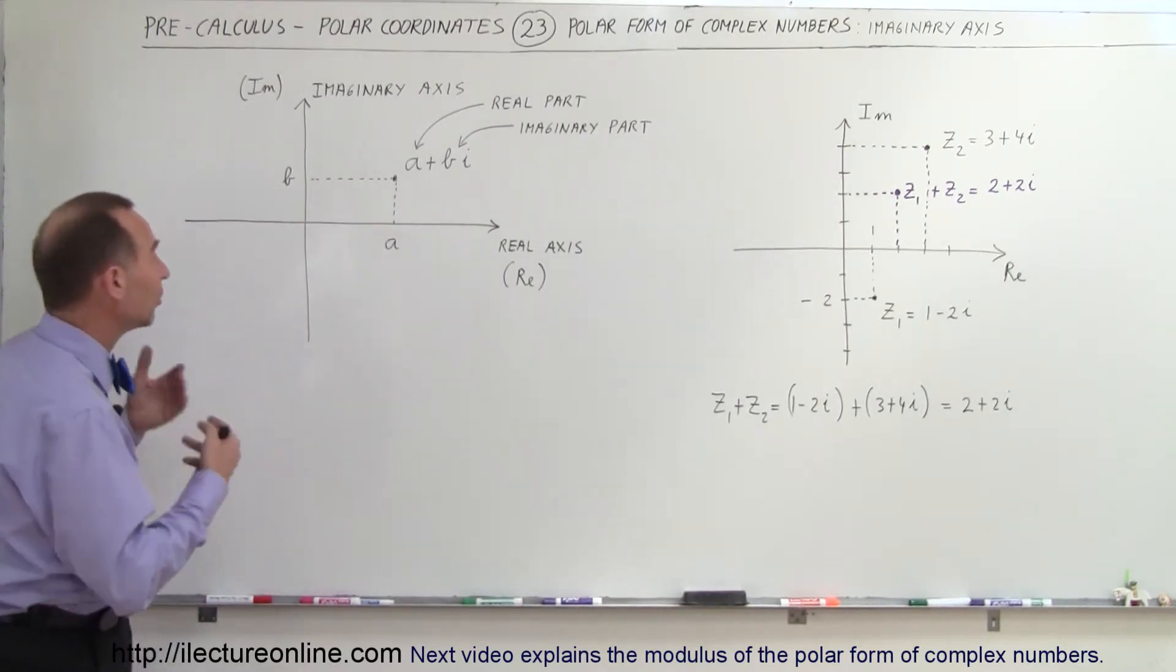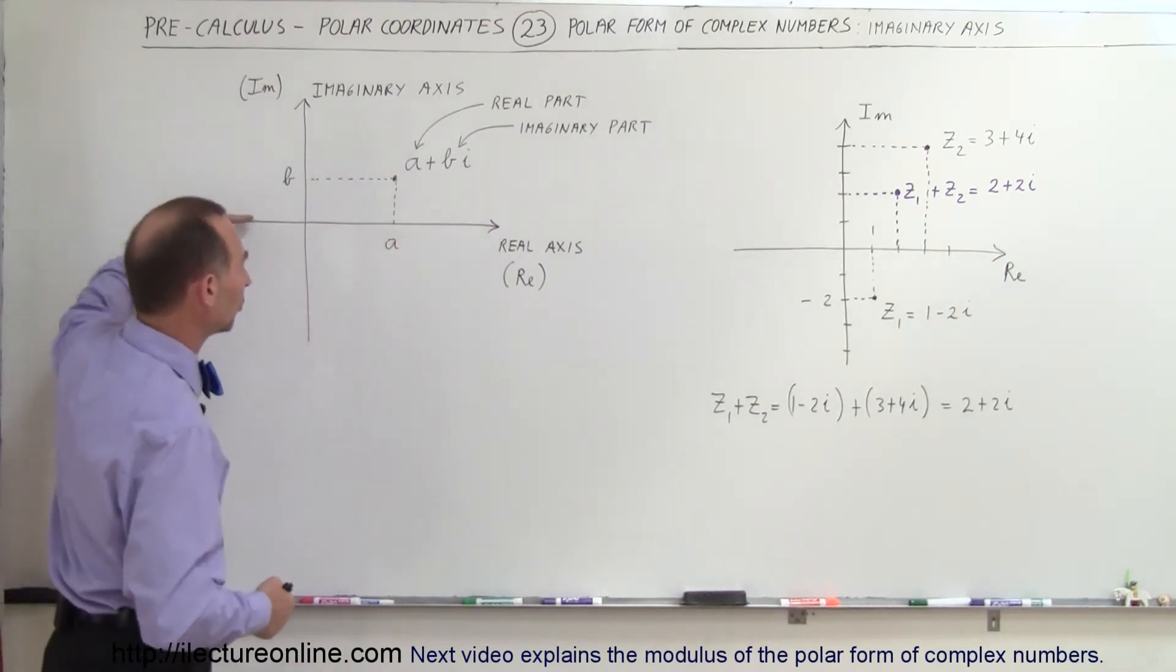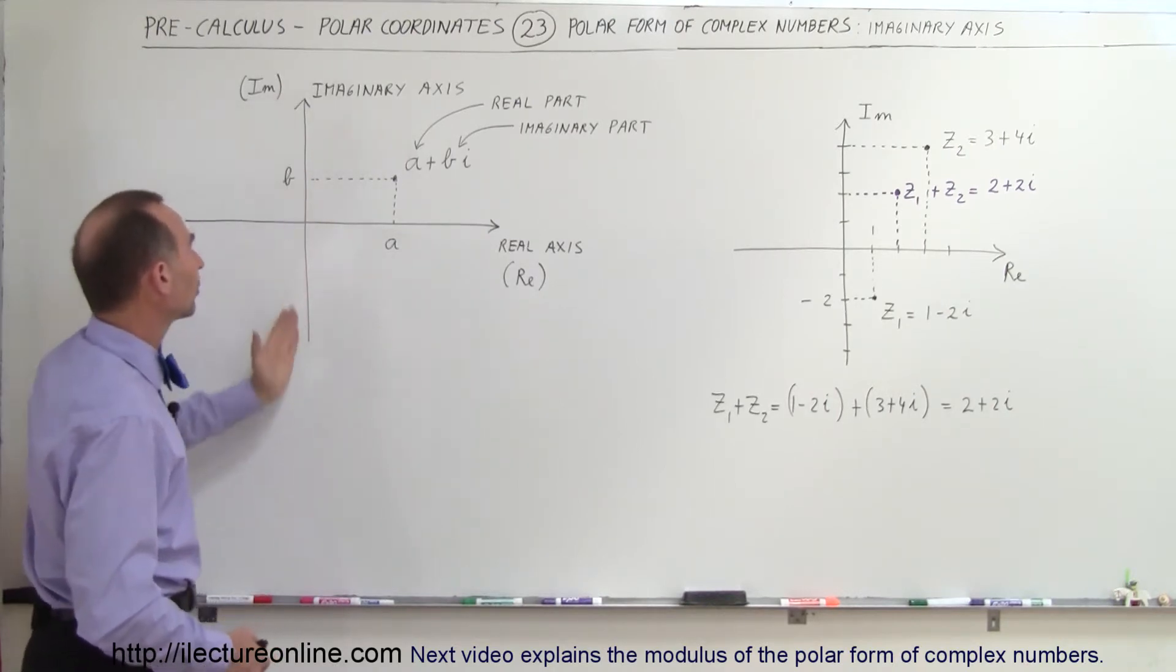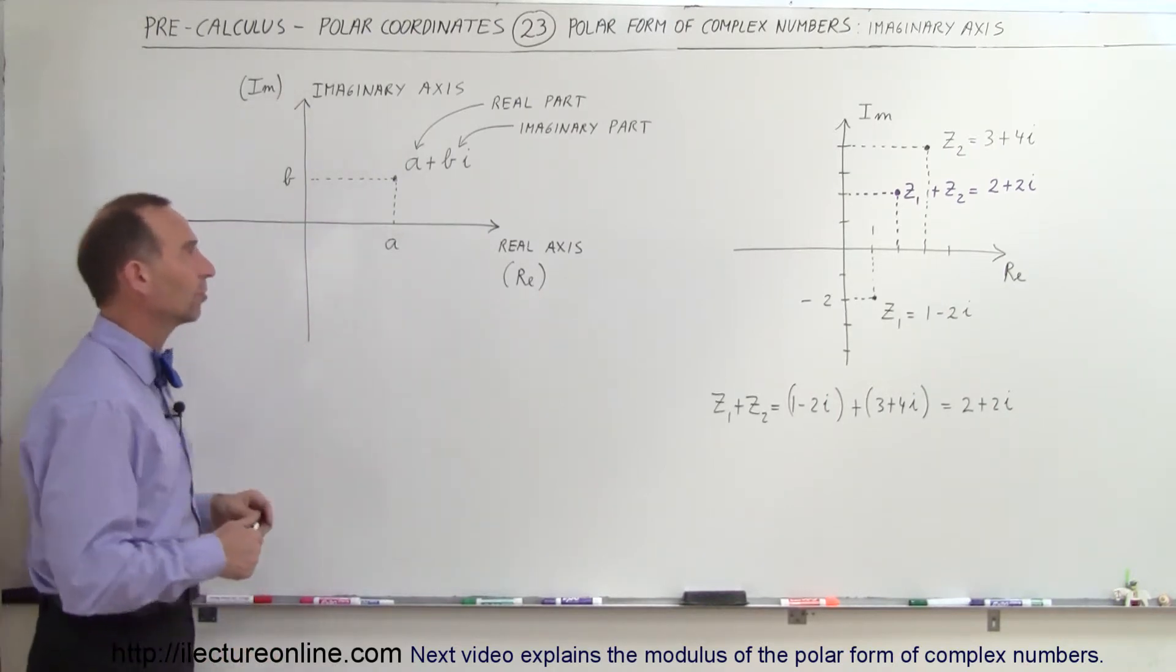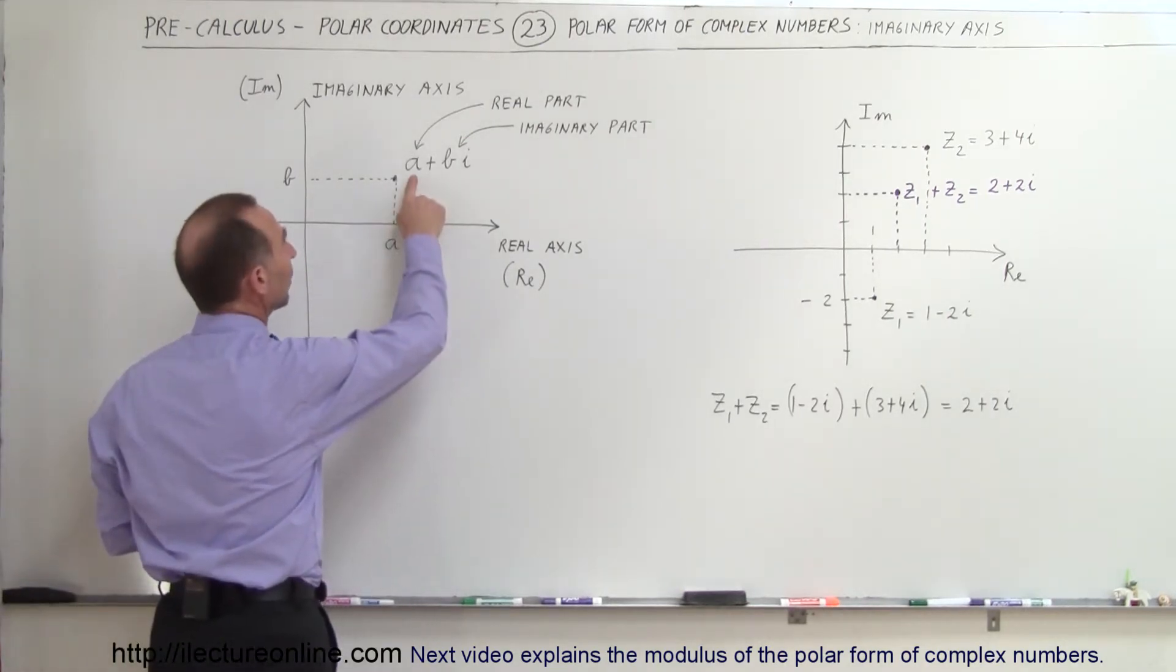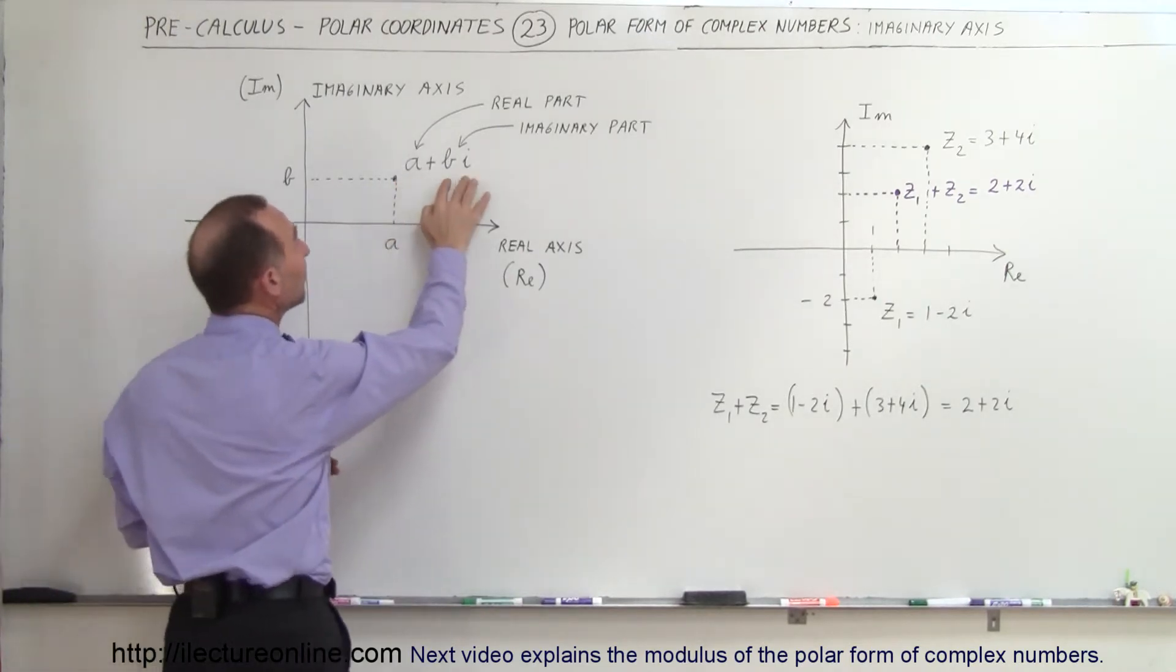complex numbers are numbers that have a real part along the horizontal axis, called the real axis, and an imaginary part along the vertical axis, called the imaginary axis. Every complex number has a real part and an imaginary part.